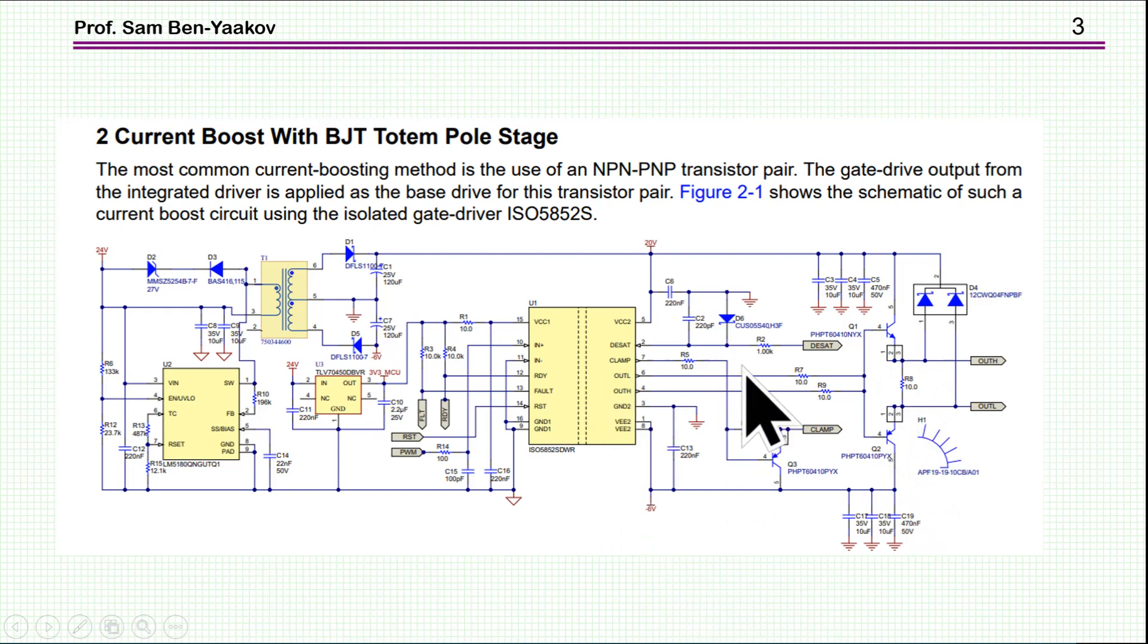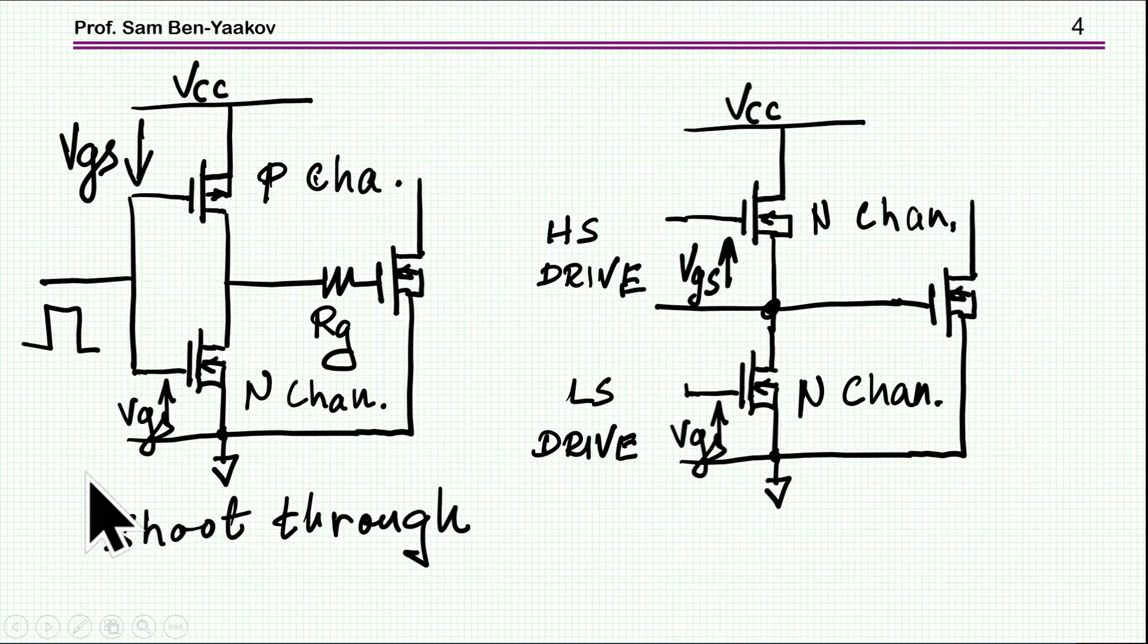And there is one drive here which is driving this buffer to boost up the current. Another approach is related to MOSFETs. And the conventional way or the simple or simple-minded way to do that would be to use two transistors, P-channel and N-channel transistors and drive them together. But there is a problem here because of the fact that if the voltage here is sort of midway, both transistors will be conducting. So there will be a problem of a shoot-through here. So this has to be done very carefully. It can be done.